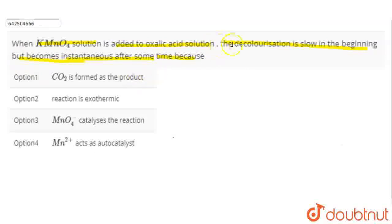Question: Why is the decolorization slow in the beginning but becomes instantaneous after some point of time when we add KMnO4 solution into oxalic acid solution?